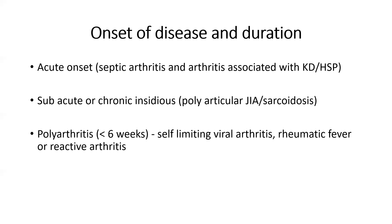The onset and duration of the disease are important. Septic arthritis presents dramatically with high fever and excruciating pain in one joint with severe limitation of movement — an acute onset. Kawasaki disease also has acute onset with high fever. By contrast, polyarticular JIA may present with an indolent, insidious arthritis over several weeks without fever.